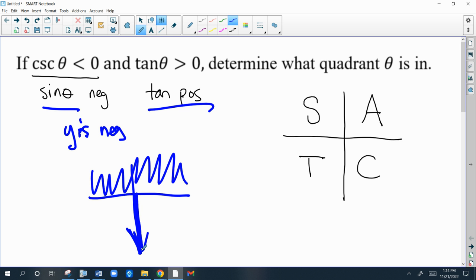So since we already know y is negative down here, tangent is positive only if x is also negative. So that would be this quadrant right here, which is quadrant three. So that's just another quick way to do it. However you choose is fine.